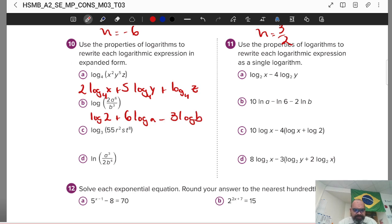Here, this guy, multiply 55. Then log base 3 of 55 plus 2 log R. Remember, base 3, plus log base 3 of S plus 8 log T. Part D also easy. D also easy is 3 L N A minus L N 2 minus 4 L N B.